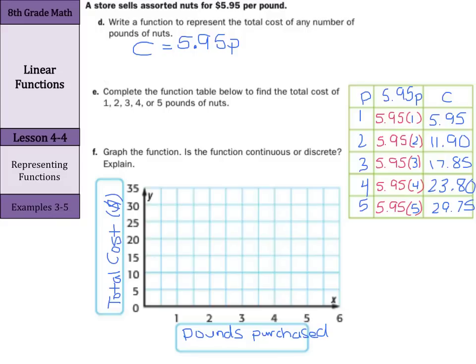And now we get to graph our points. We'll have one pound at $5.95. And actually, that's not there. That would be closer to here underneath or above the one. Two pounds at $11.90 is going to be somewhere in this neck of the woods. Three pounds at $17.85 is somewhere right along here.